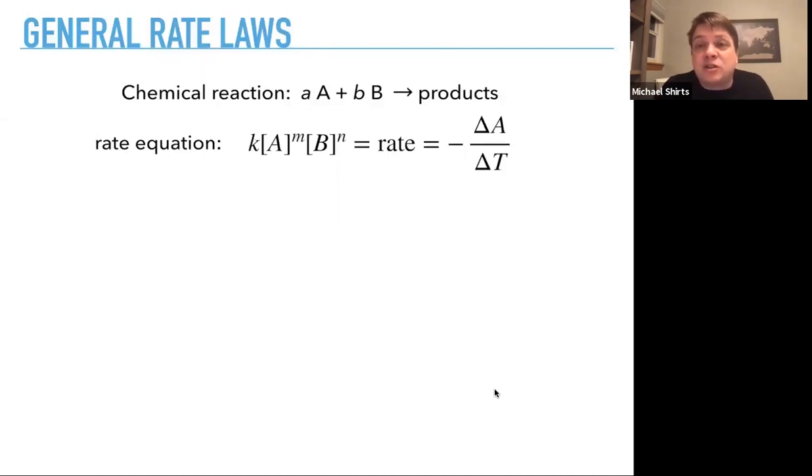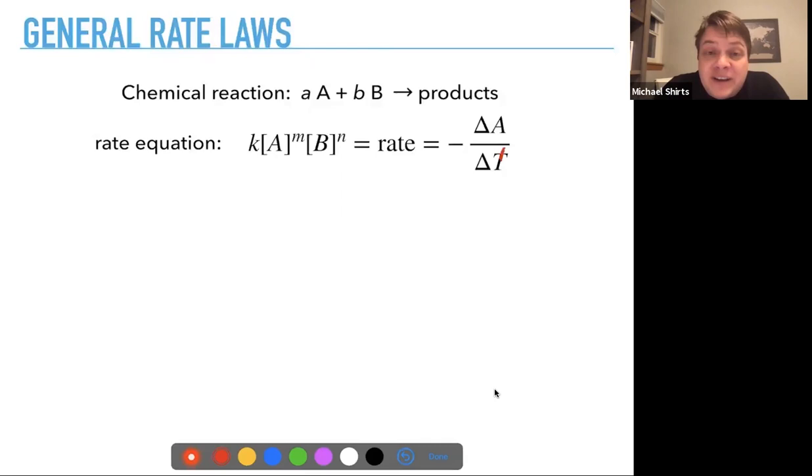So a rate equation looks something like this. The rate of disappearance of A is frequently proportional to the concentration of A to some power and the concentration of B to some power, and these powers are, in many cases, integers. They don't have to be, but they usually are, and there's some constant proportionality to turn this powers of the concentrations into a rate. So that's what we discover, is that rates usually look something like this.